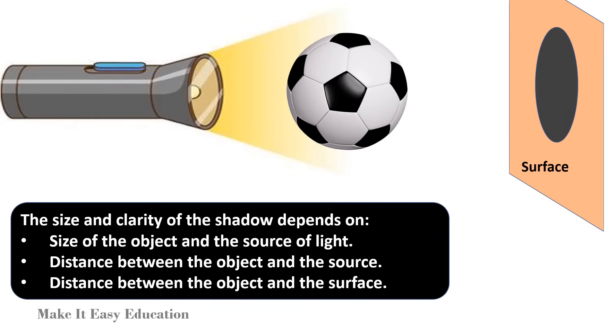The size and clarity of the shadow depends on: size of the object and the source of light, distance between the object and the source, distance between the object and the surface.